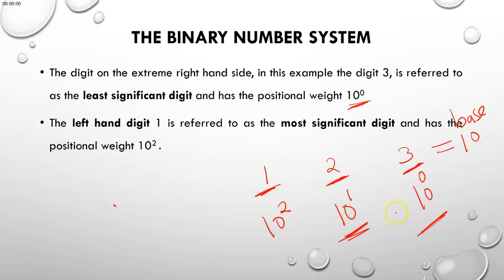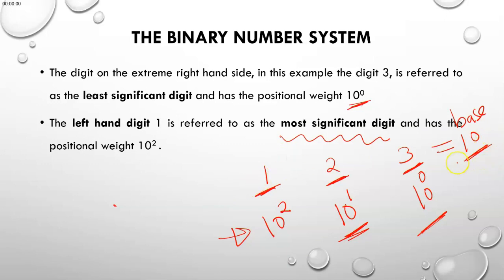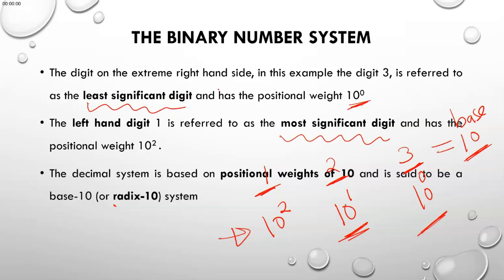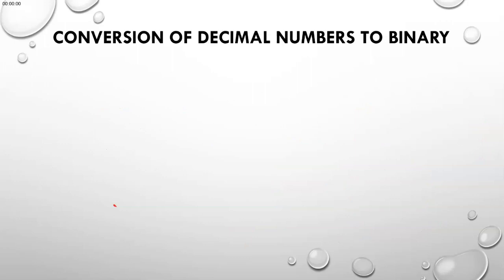Since decimal is base 10, the binary number system has a base of 2. The leftmost digit is the most significant digit and the rightmost is the least significant digit. The decimal number system has a positional weight of 10 and is said to be base 10, or radix 10. Now we are going to do some conversions.